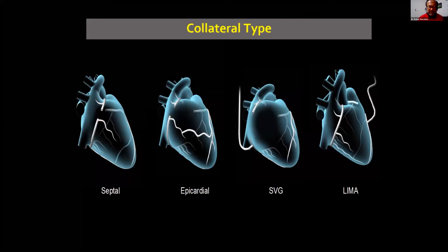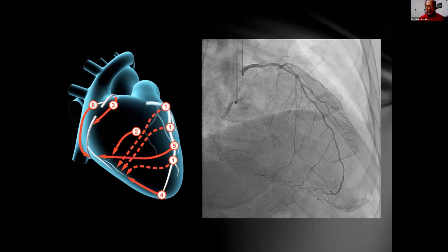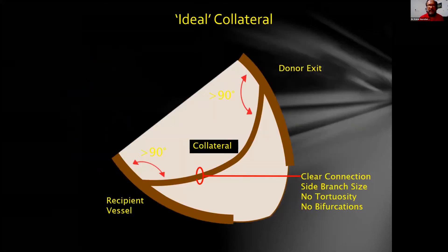Negotiating the collateral channel is very important for retrograde. We have four types of collateral channels: septal, epicardial, venous graft, and LIMA. Before doing CTO retrograde, you have to select which one first, then second, then third, then fourth if you fail. Ideal collaterals should have more than antegrade angle with both donor and recipient vessels, no tortuosity, no bifurcation, and clear connections.